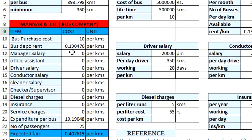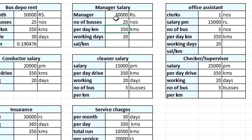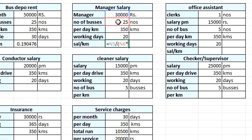Now let us calculate the salary of a manager. For every 25 buses we appoint one manager, who receives ₹30,000 salary per month and works 20 days a month. Per kilometer, the manager salary = ₹30,000 ÷ (25 buses × 350 km × 20 working days) = ₹0.17 per kilometer per bus.